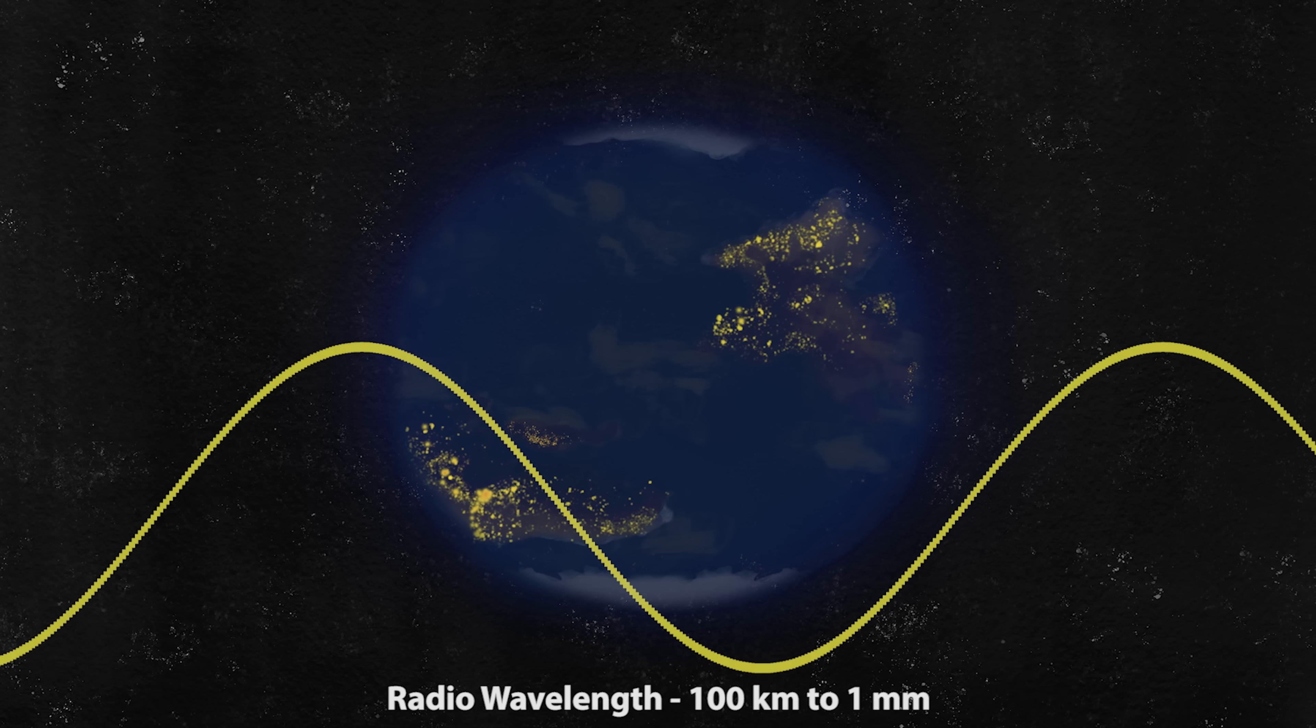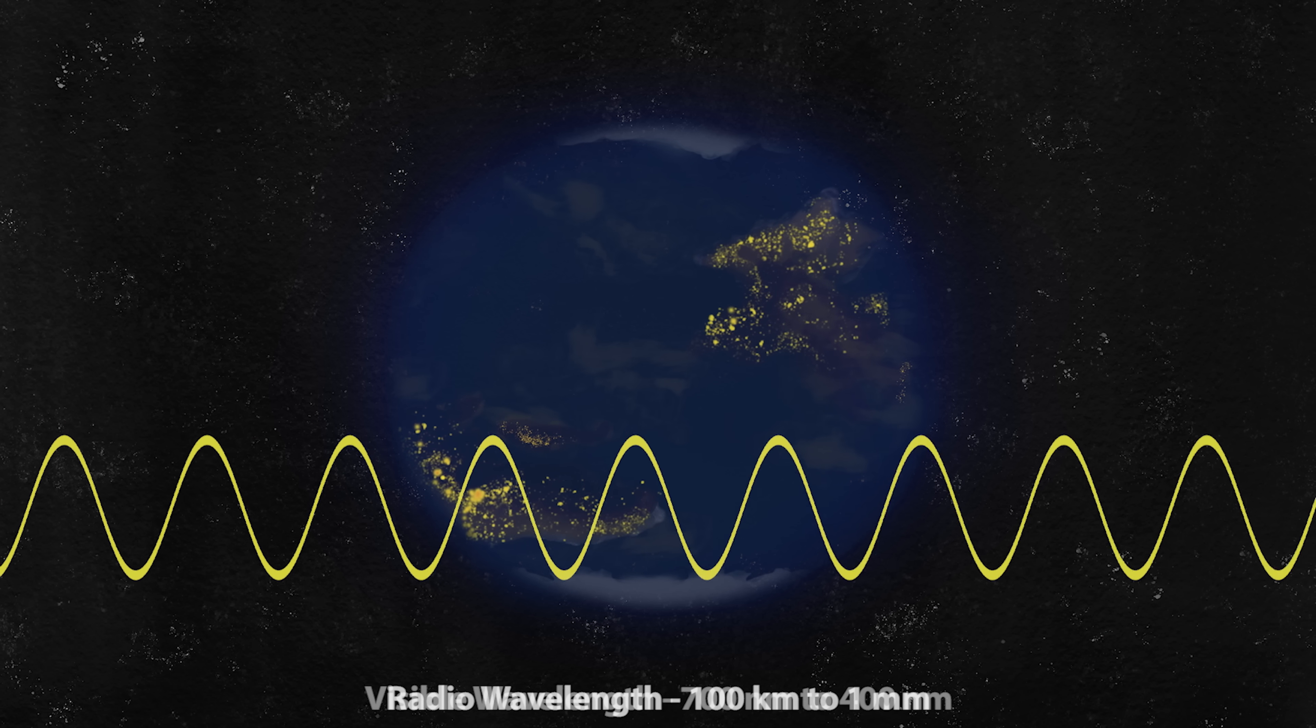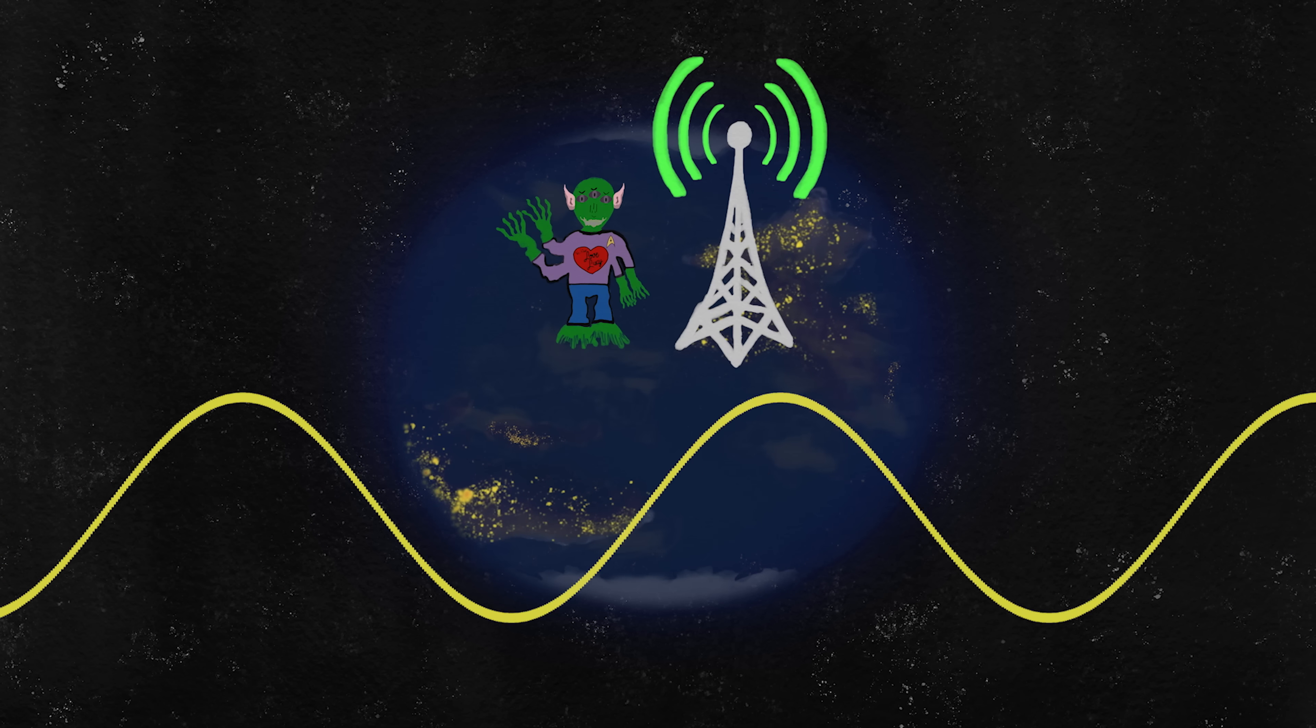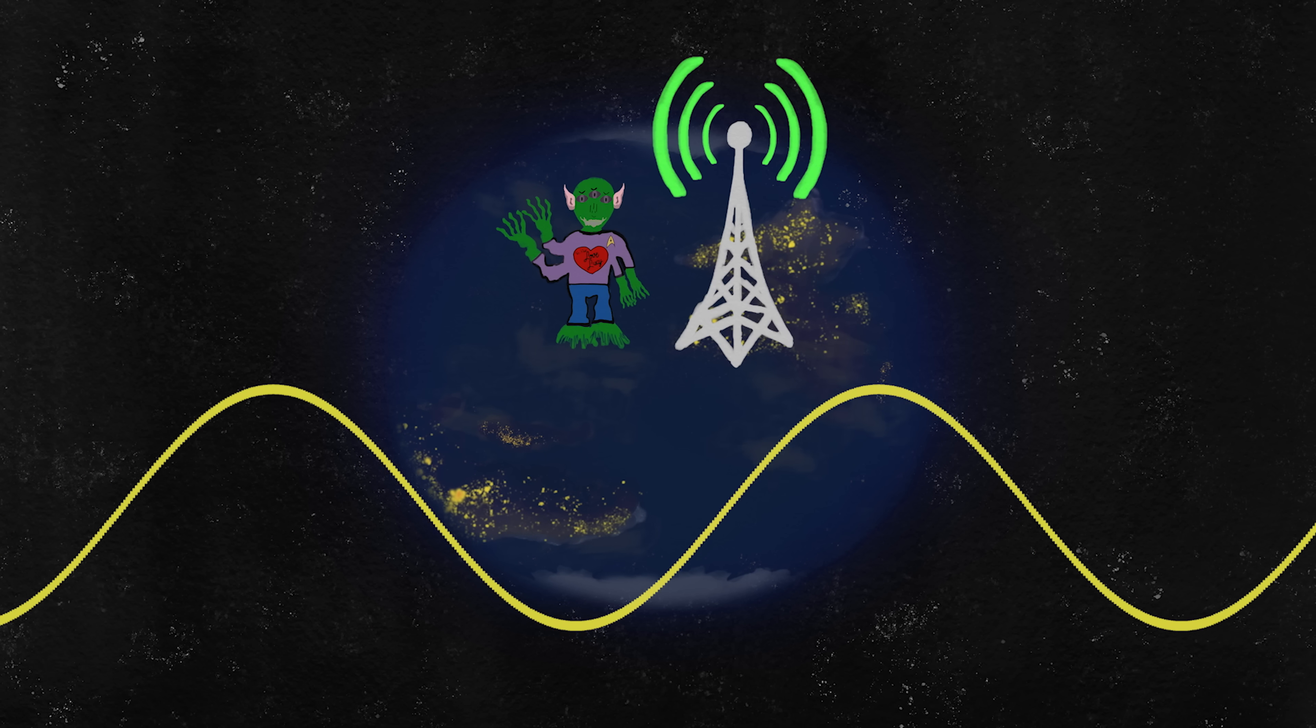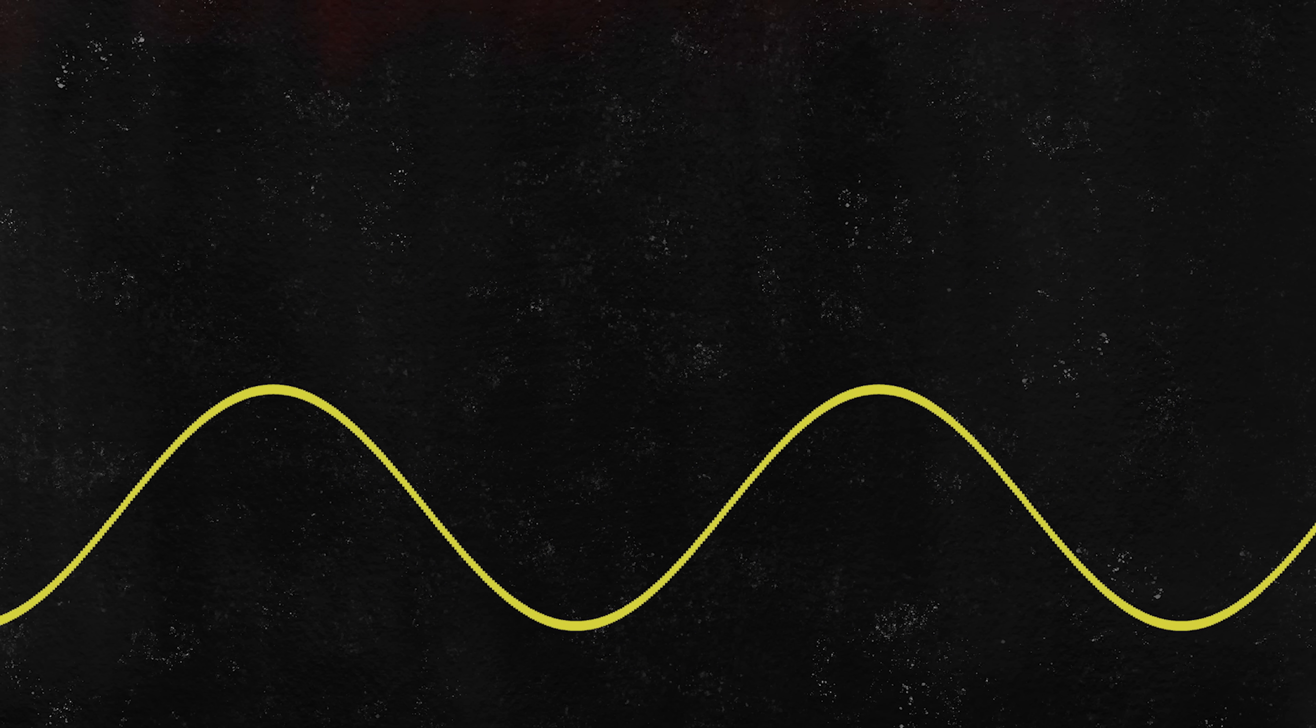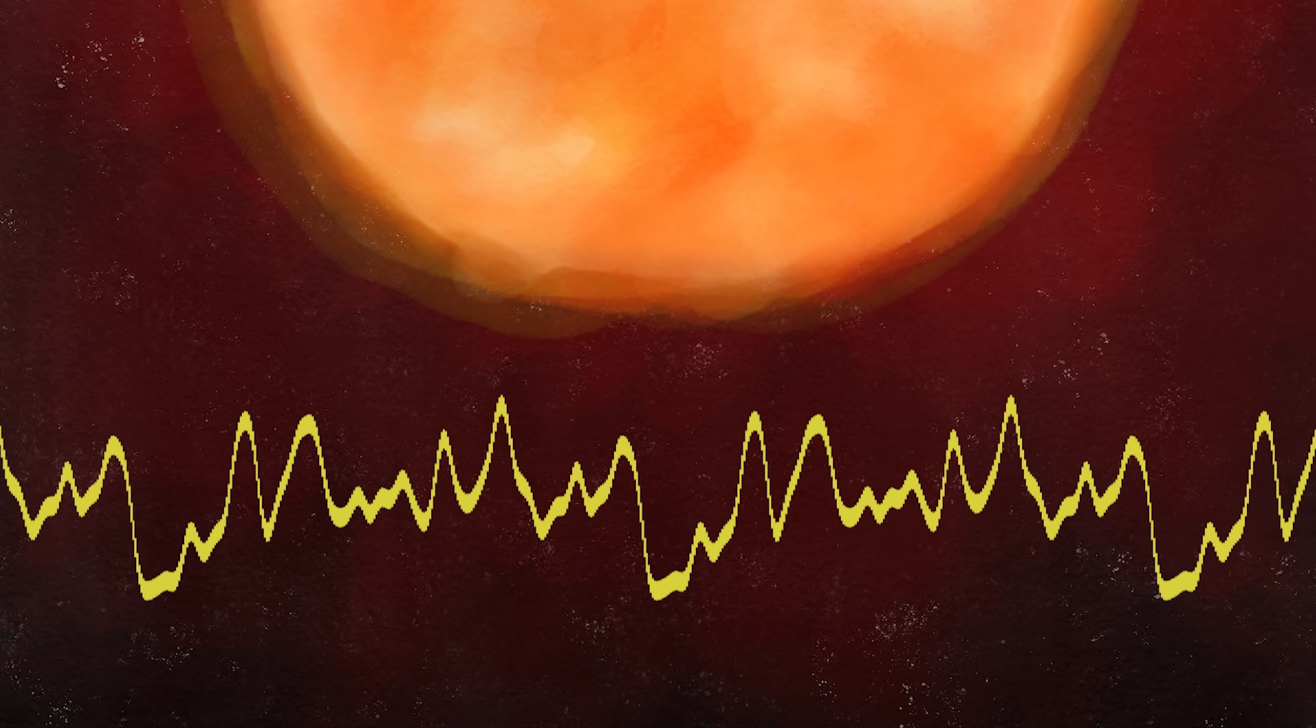But there's more. Radio waves are just another wavelength of light. If ET is broadcasting, those radio transmissions will also be magnified, but not to the extent of visible light, as the radio spectrum is actually distorted by the interference of the sun's corona.